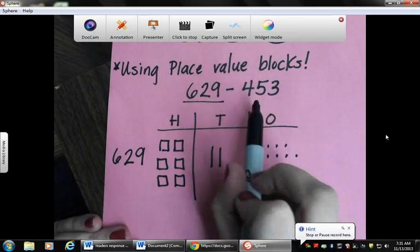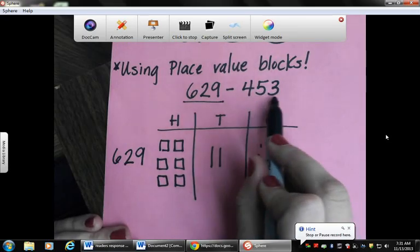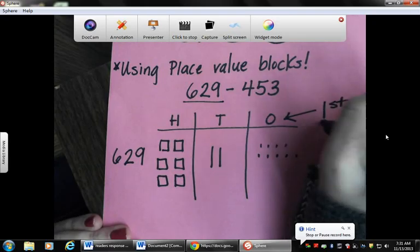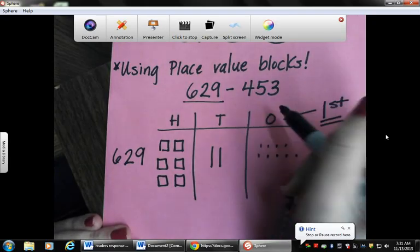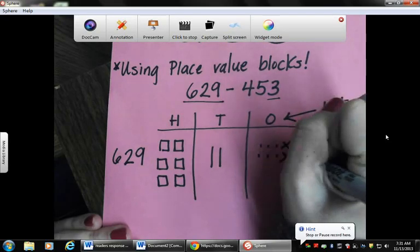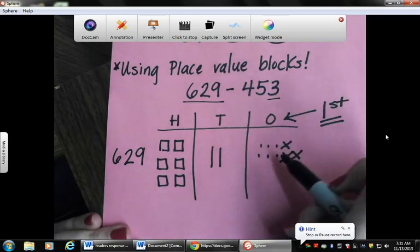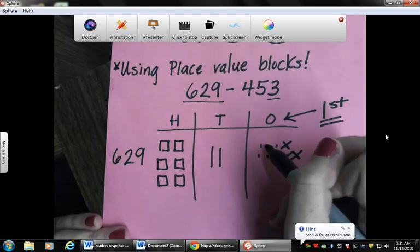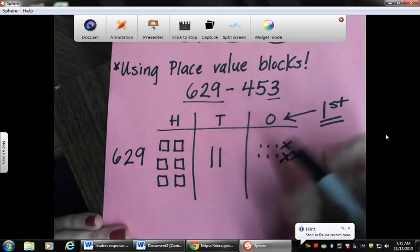Then we are looking at the number that we are taking away. Remember, we always start with our ones first. So we are taking away three ones. So we can cross out three of the ones. And then you count how many you have left. So we have one, two, three, four, five, six ones left.